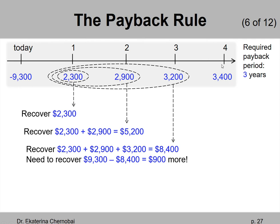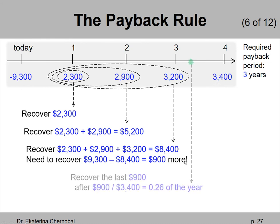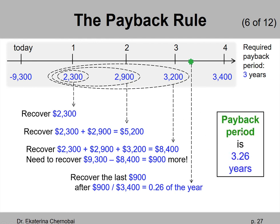We are not going to wait the full fourth year, during which we will recover $3,400. Instead, we will need to wait another $900 divided by $3,400 equals 0.26 of the year. So 0.26 of the fourth year plus the first three full years — that's your actual payback period. Three full years and roughly a quarter of the fourth year, so 3.26 years.